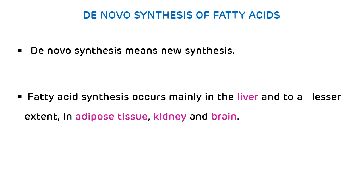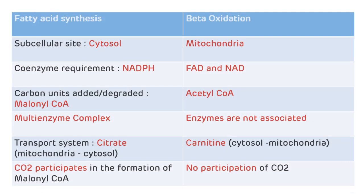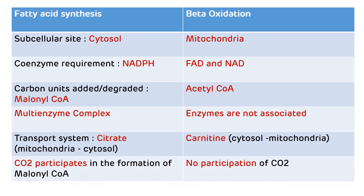The first major difference between de novo fatty acid synthesis and beta-oxidation is the subcellular site: fatty acid synthesis occurs in the cytosol while beta-oxidation occurs in the mitochondria. The second difference relates to coenzyme requirements: the reducing equivalents for fatty acid synthesis are supplied as NADPH, while in beta-oxidation they are supplied as FAD and NAD. Fatty acid chain elongation adds two-carbon units in the form of malonyl-CoA.